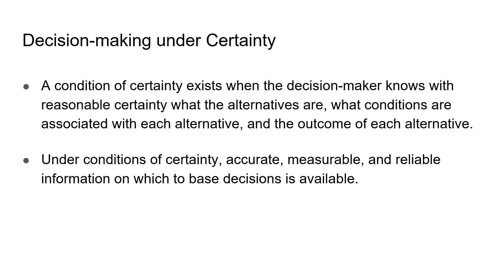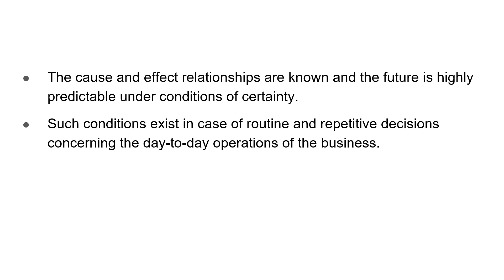A condition of certainty would exist when the decision-maker knows with reasonable certainty what the alternatives are, what conditions are associated with each alternative, and the outcome of each alternative. Under conditions of certainty, accurate, measurable, and reliable information about the base conditions is available. The cause-and-effect relationships are known, and the future is highly predictable. Such conditions exist in the case of routine and repetitive decisions concerning day-to-day operations of the business.